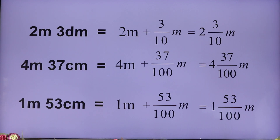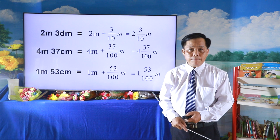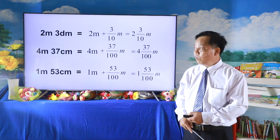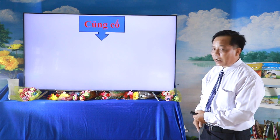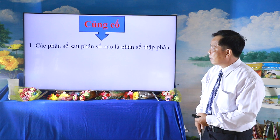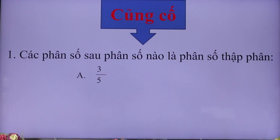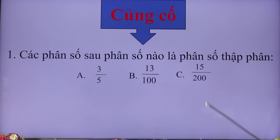Các em đối chiếu lại kết quả của các em. Thầy tin chắc rằng kết quả của các em đúng với kết quả của thầy. Thầy tuyên dương các em đã làm xong bài tập số 4, các em cũng làm rất nhanh. Bây giờ thầy thưởng cho các em 1 trò chơi củng cố. Phần củng cố này các em chú ý trả lời: các phân số sau, phân số nào là phân số thập phân? A: 3/5, B: 13/100, C: 15/200.